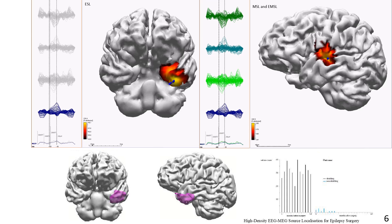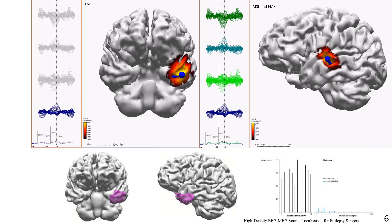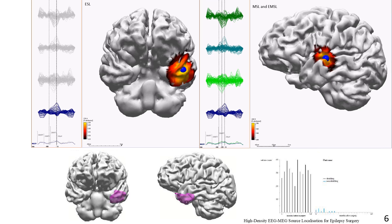In contrary distinction to the last case, this case demonstrates the value of ESL over MSL in interrogating an ictal average discharge, with the ESL appearing 25 milliseconds before the MSL. The EMSL solution gave the same result as the MSL solution. The patient was seizure-free at 22 months following resection in magenta, which included only the ESL result. Histology again returned as cortical dysplasia.